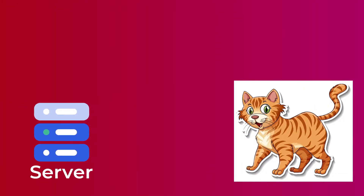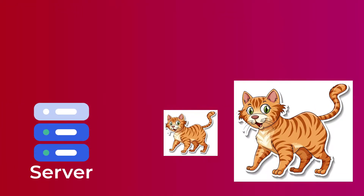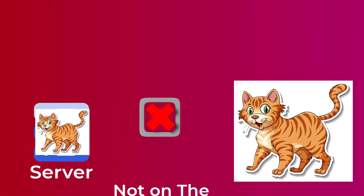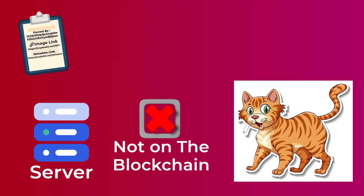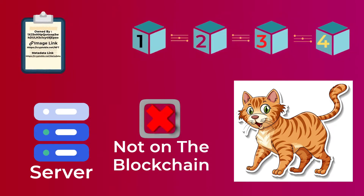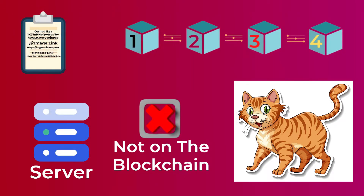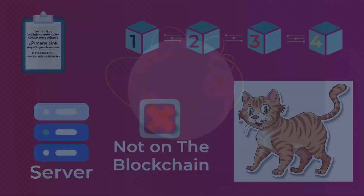You should know that the image itself is stored on a server somewhere else, not on the blockchain. Only the link to the image is stored on the token, and then the token itself is stored on the blockchain.